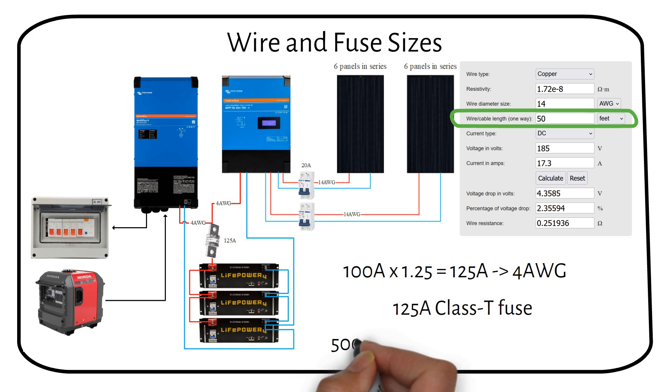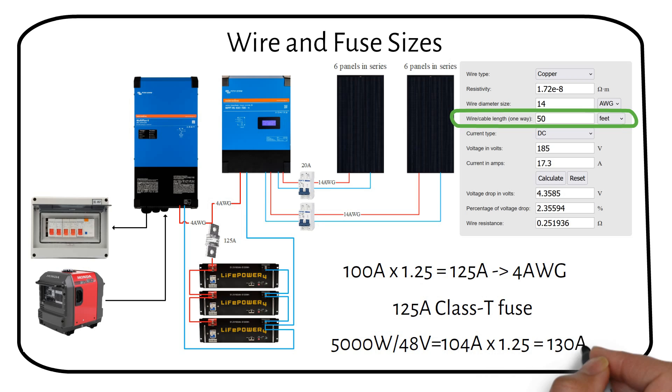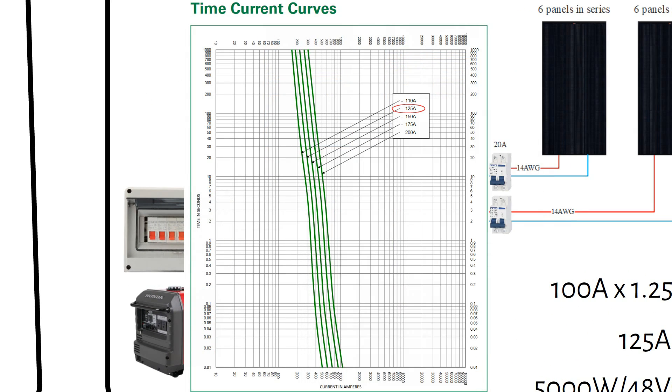The inverter will draw a maximum of 104A. Applying the 1.25 safety factor, the maximum current is 130A. Again, use a 4 gauge welding cable and a 125A fuse. While the calculated current is slightly above 125A, the fuse will not blow at 130A, as we can see in this curve of the 120A fuse.